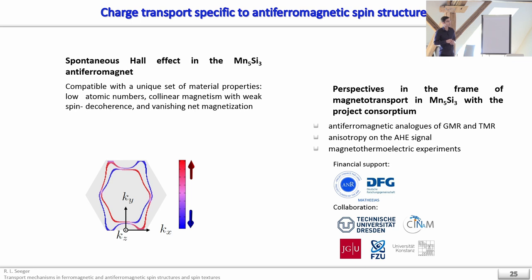In conclusion, we have experimentally measured a spontaneous Hall effect in Mn5Si3, a very interesting material with different magnetic phases including collinear and coplanar phases at low temperature. It is notable because it is a material with low atomic numbers and collinear magnetism. There are many perspectives within this collaboration: we believe we can prepare antiferromagnetic analogs of GMR and TMR, and ongoing magnetotransport experiments concern the anisotropy of the anomalous Hall effect and attempts to measure the anomalous Nernst effect in these materials. Thank you very much.